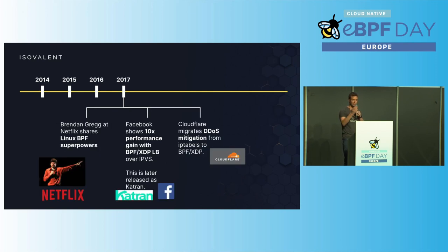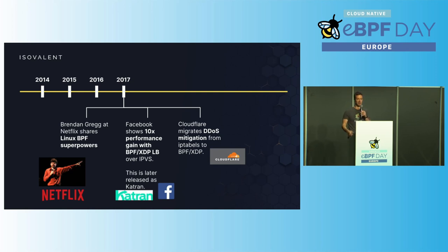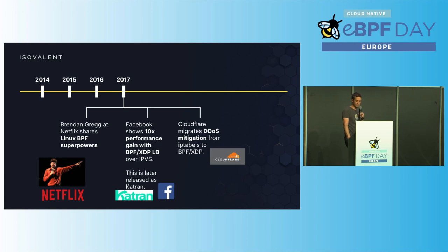A year later, Brendan Gregg coined the term 'Linux BPF superpowers' — very fitting, because BPF is a superpower in the operating system allowing things not possible before. Also that same year, Facebook announced they were now doing load balancing with BPF — 10 times faster than IPVS — and the world was astonished. 10x improvements are very rare for mature production infrastructure. This code is known as Katran today and is available open source. Cloudflare also started migrating all of their DDoS use cases to BPF. In that year it became clear: eBPF was going to be a technology that changes the world.